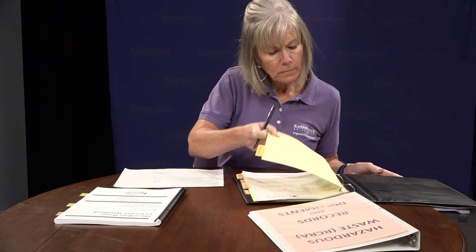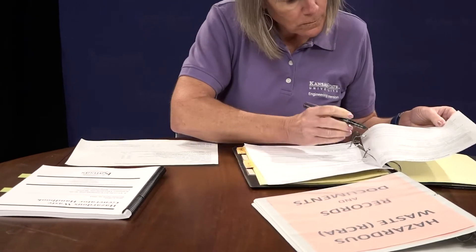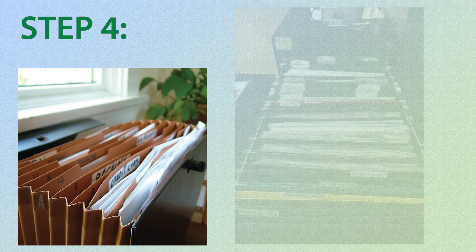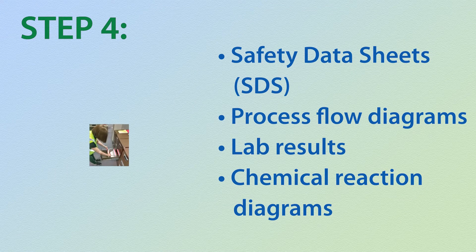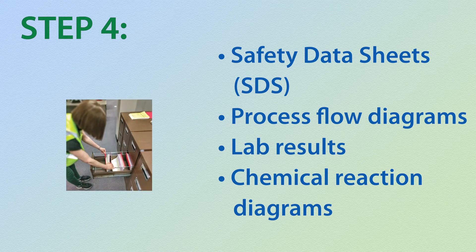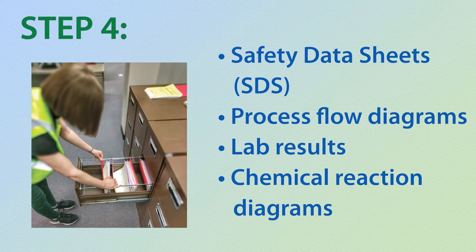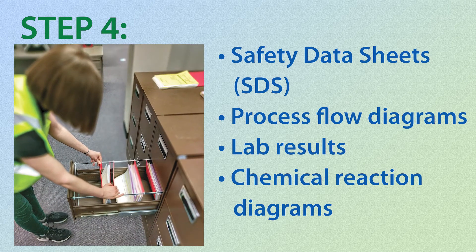Generators can record hazardous waste determinations on the template form or in a different document or spreadsheet record. You must maintain the record used to make the determination in a specific hazardous waste file, either electronic or hard copy. In addition to the determination document itself, records used to make the determination must be attached or included. These records may include SDSs, process flow diagrams, certified laboratory results, and chemical reaction diagrams.